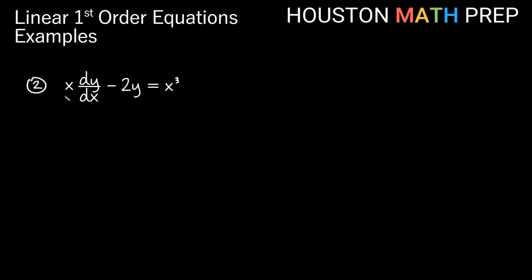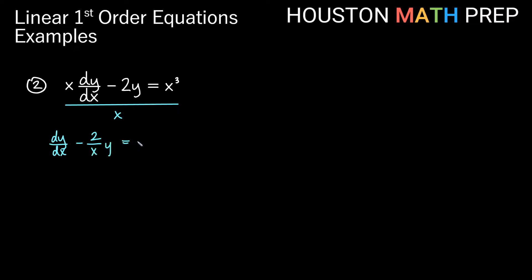Looking at our second example: x times dy dx minus 2y equals x cubed. This is not in normal form, so we need to divide everything by x first. That gives us dy dx minus 2 over x times y equals x squared. Now we find our integrating factor: it's e to the integral of p dx, and here p is negative 2 over x — don't forget the minus sign.